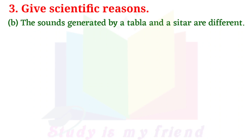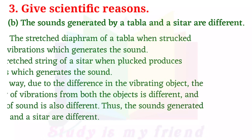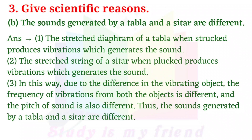B. The sound generated by a tabla and a sitar are different. Answer: The stretched diaphragm of a tabla, when struck, produces vibrations which generate sound. The stretched string of a sitar, when plucked, produces vibrations which generate sound. Due to the difference in the vibrating object, the frequency of vibrations from both objects is different, and the pitch and sound are also different. Thus, the sound generated by a tabla and a sitar are different.